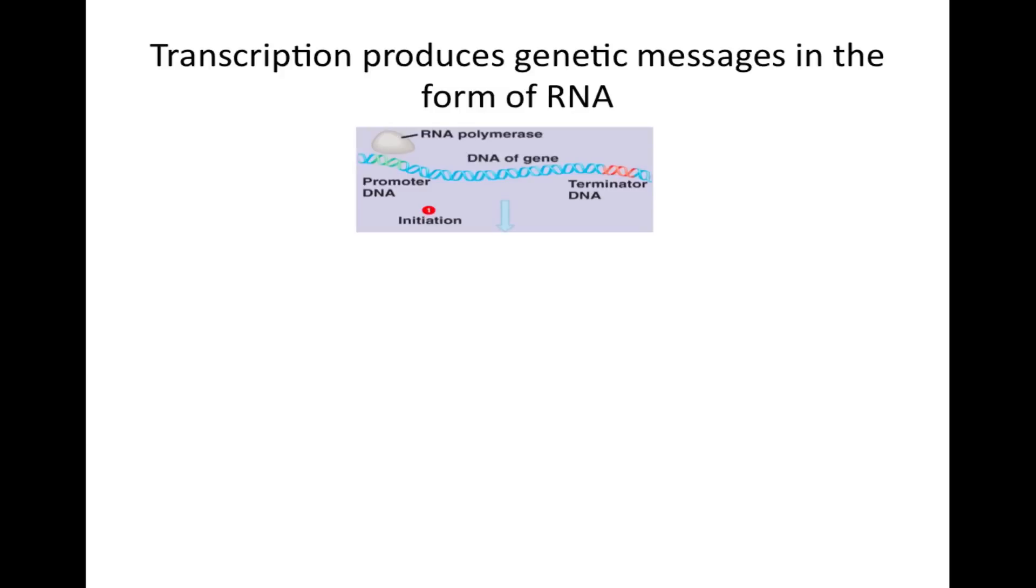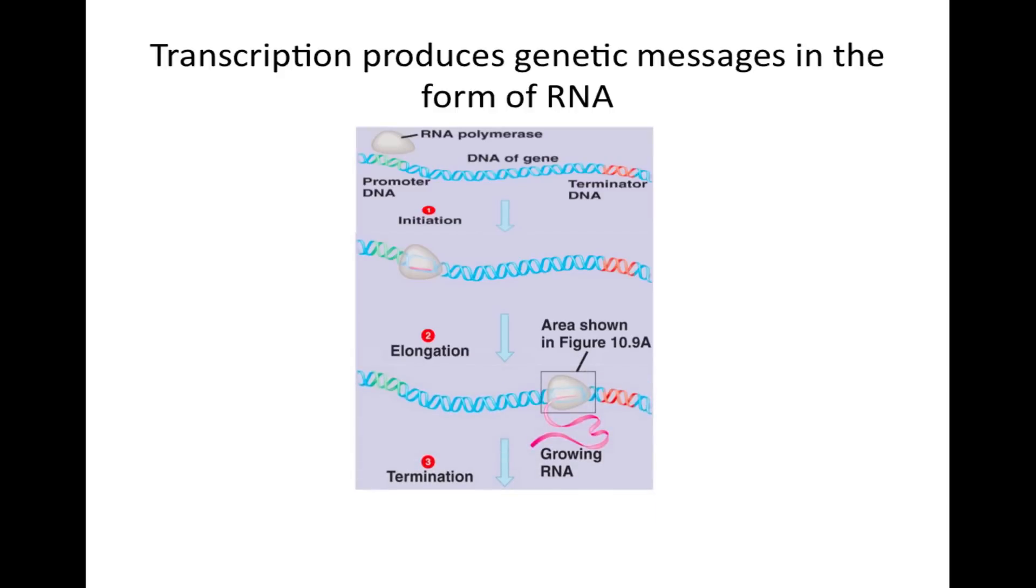Transcription produces genetic messages in the form of RNA. First is initiation, the process when an RNA polymerase enzyme attaches itself to the promoter DNA. In the elongation process, the RNA polymerase unwinds and adds nucleotide sequences to a daughter strand using the original DNA molecule as a template. In termination, the RNA polymerase detaches itself from both the DNA and the completed RNA.